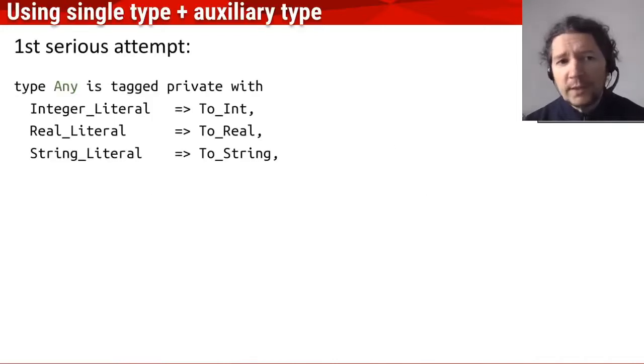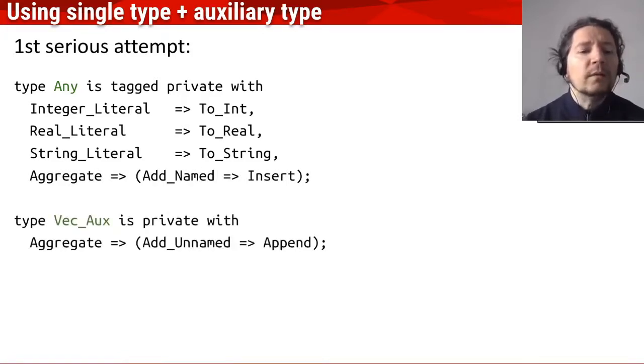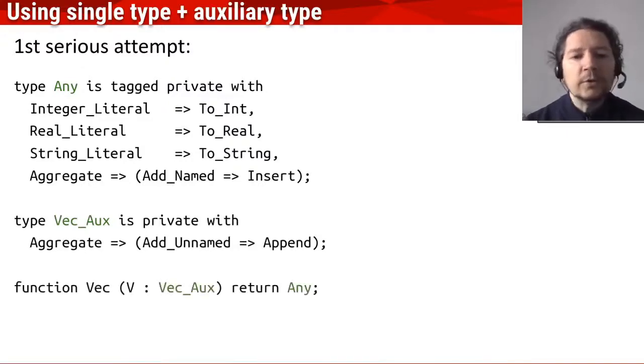In which we have a basic type or the core type in which we have all the literal initializations and also, for example, the map initialization, and then we have an auxiliary type for the vector initializations and a conversion function that returns the core type from the auxiliary type.